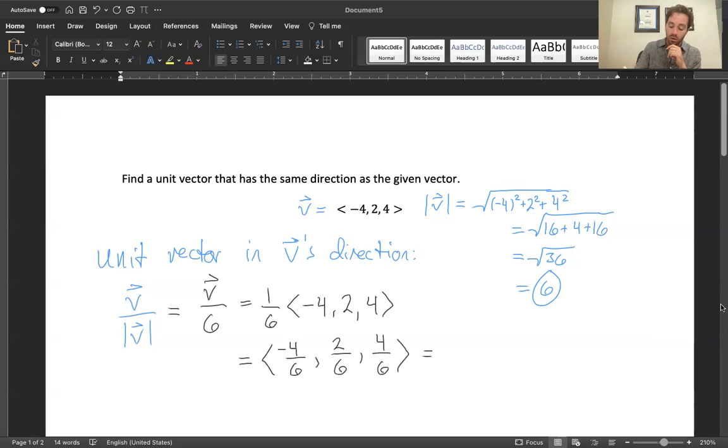And yes, we are going to reduce it. Not just because I hate saying sixths, everybody hates saying that. But 4 over 6 cancels down to negative 2 thirds, 2 over 6 is 1 third, and 4 over 6 is another 2 thirds.